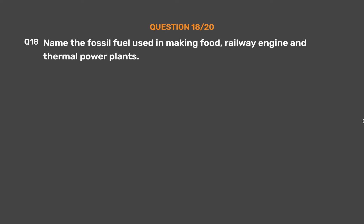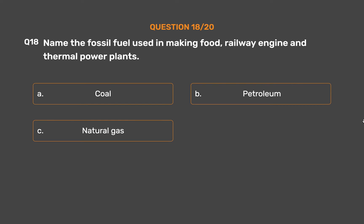Question number 18: Name the fossil fuel used in making food, railway engines, and thermal power plants. Option A: Coal. Option B: Petroleum. Option C: Natural gas. Option D: None of these.